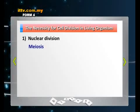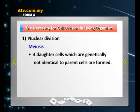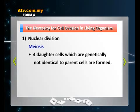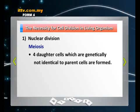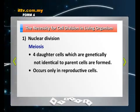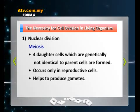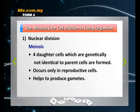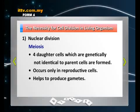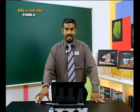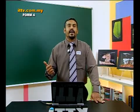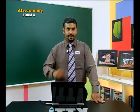Meiosis, on the other hand, produces four daughter cells which are genetically not identical to the parent cell. Meiosis occurs only in reproductive cells, and meiosis helps to produce gametes. Examples of gametes are — in humans, sperm cell and ovum; in plants, pollen grain and the ovule.